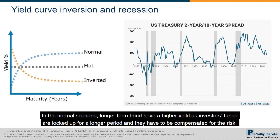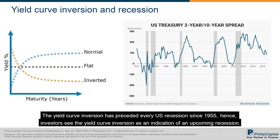In the normal scenario, longer-term bonds have a higher yield as investor funds are locked up for a longer period and they have to be compensated for the risk. The yield curve inversion has preceded every US recession since 1955.